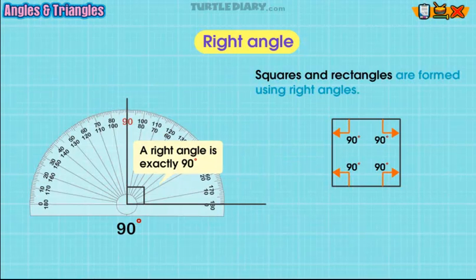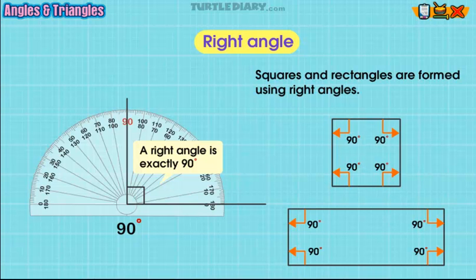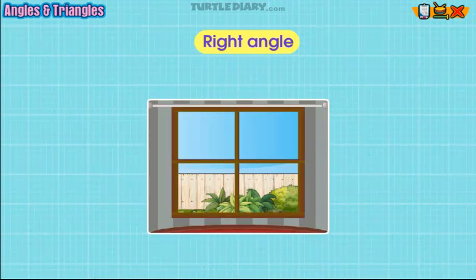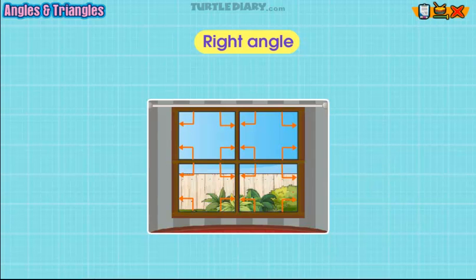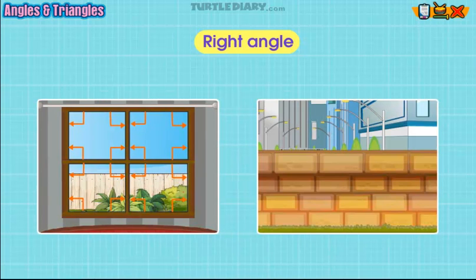Squares and rectangles are formed using right angles. Let's look at a few examples: you are looking out the window of your house and notice that the window panes are formed by right angles. You are exploring a new city with your family and notice that many of the buildings are built out of brick. The bricks all form right angles.